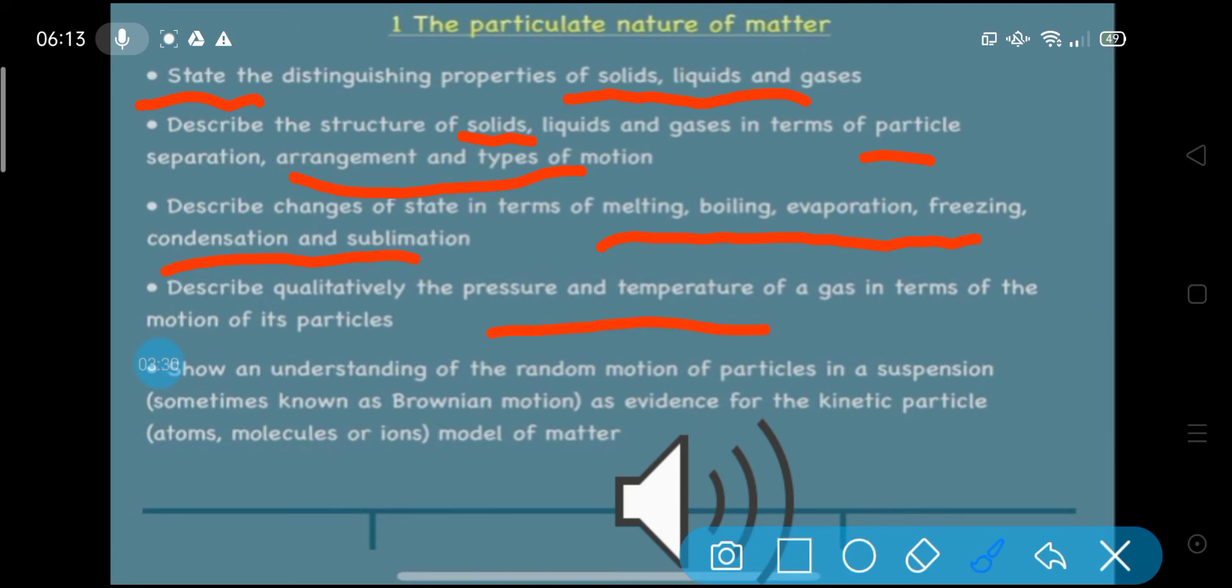Describe qualitatively the pressure and temperature of a gas in terms of motion of particles. Show an understanding of the random motion of particles in a suspension as evidence for the kinetic particle model of matter. Describe and explain diffusion, explain changes in terms of kinetic energy, state evidence for Brownian motion, and describe and explain dependence of the rate of diffusion on molecular mass.